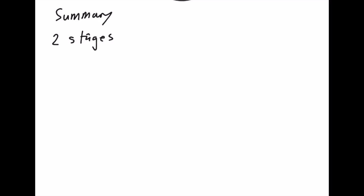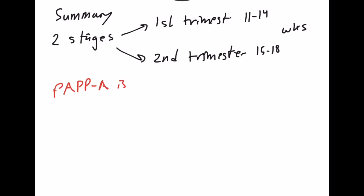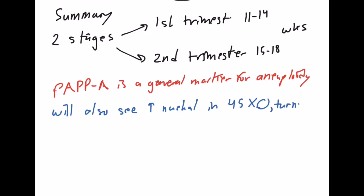Let's summarize all these things and bring it back together. You have two stages of maternal testing. First trimester, 11 to 14 weeks, and second trimester, 15 to 18 weeks. The first trimester has that combined test and nuchal translucency. The second trimester has the quad screen. Remember, PAPPA is a general marker for aneuploidy. If you see that being down, think there's some chromosomal abnormality. You'll also see nuchal translucency in Turner syndrome, which is 45 XO, missing that other X chromosome. You'll see increased alpha-fetoprotein in both neural tube defects and gut defects like omphalocele and gastroschisis.